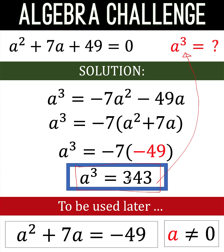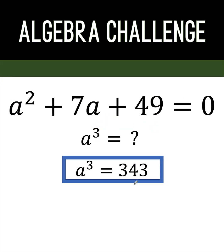But wait, many of you might be protesting now. If a cubed equals 343, then what's the value of a? Let's try to find the value of a. So let's take the cube root of both sides of the equation to get a equals the cube root of 343.